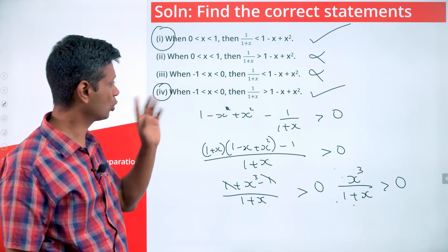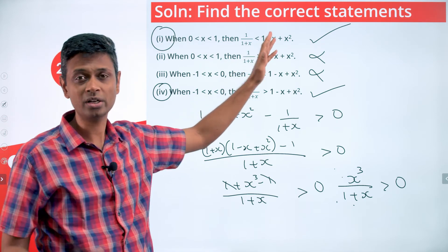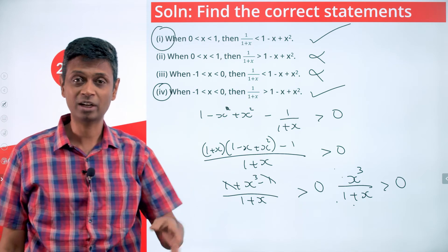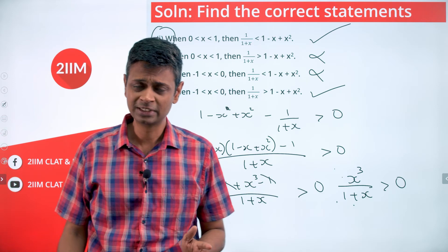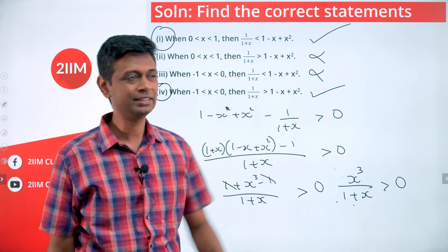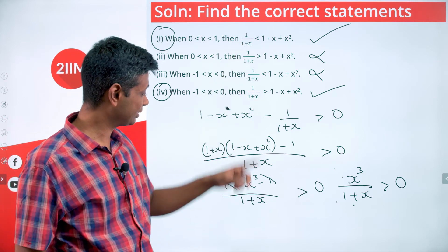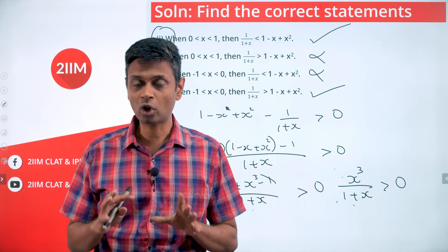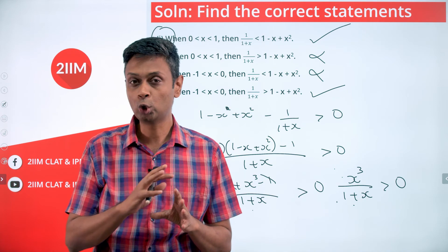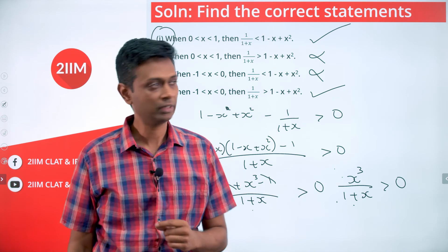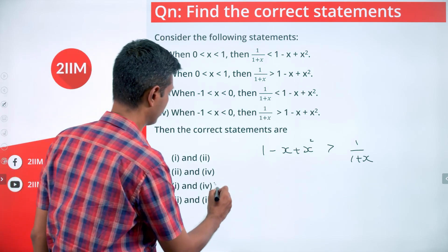We are looking for an answer choice that says statements 1 and 4 both hold good. The key thing here is to bring the comparison to one side as an inequality and then solve it — plugging in values one by one across the range could be a nightmare. Also, don't just cross-multiply, because there's a (1+x) in the denominator and cross-multiplying can cause errors. Bring everything to one side, take the LCM, and simplify. So statements 1 and 4 both hold good.